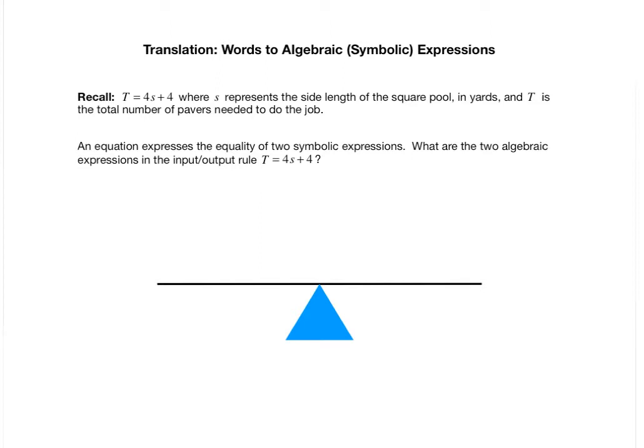Let's recall from a previous screencast we came up with this equation t equals 4s plus 4, where s represented the side length of the square pool in yards and t is the total number of pavers needed to do the job. This was an algebraic representation of the input output rule that we studied in one of the early screencasts.